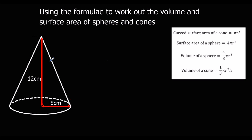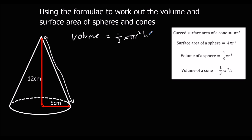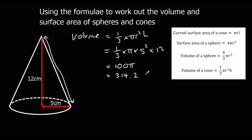This time they've given us the vertical height but not l, so we'll have to work l out to find the curved surface area. We'll start with the volume: 1 third times pi r squared h, which is 1 third times pi times 5 squared times 12. That is 100 pi, or 314.2 centimeters cubed to 1dp.